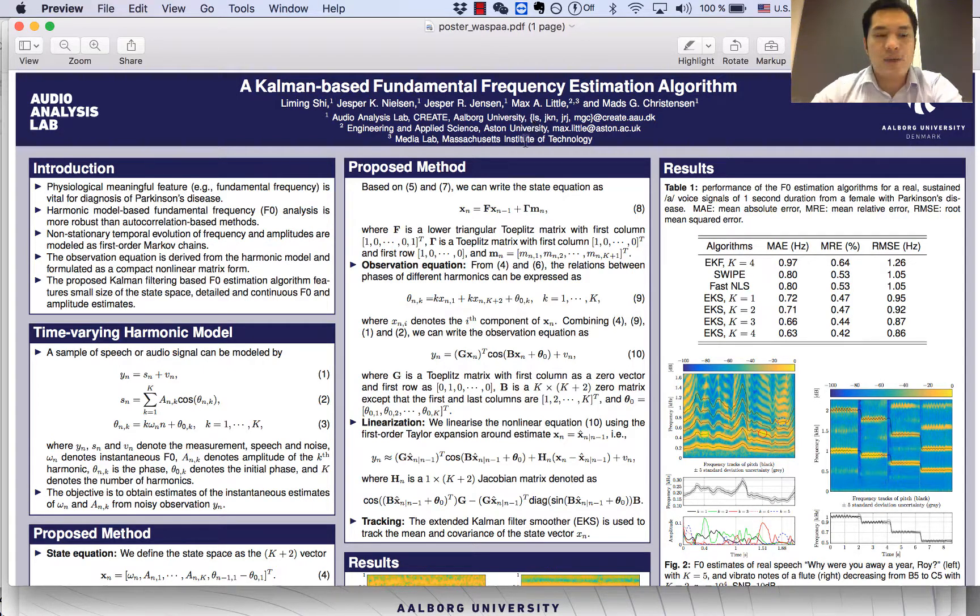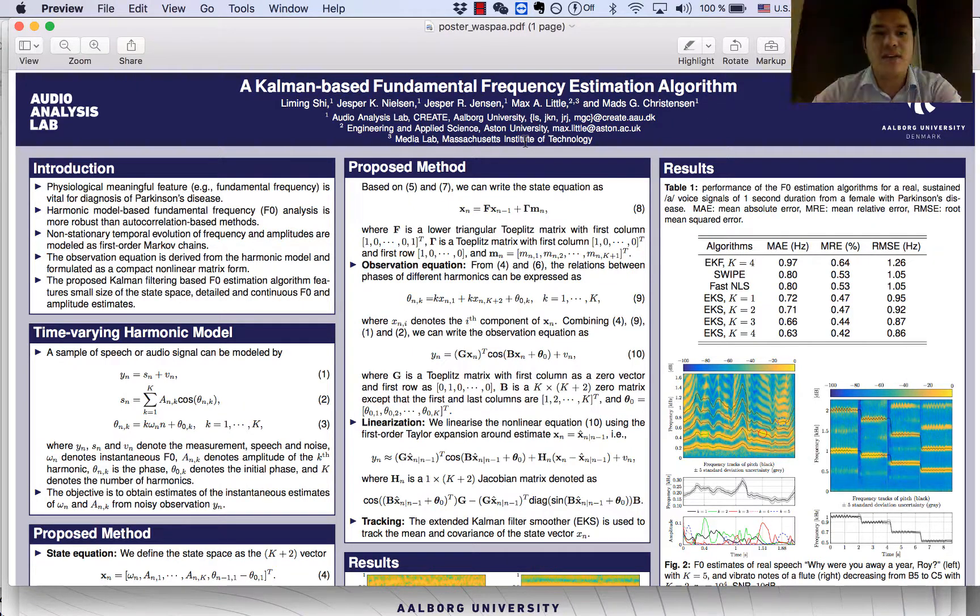In this paper, we model the non-stationary temporal evolution of frequency and amplitudes using the first-order Markov chains. We derive the observation equation based on the harmonic model and formulate it as a compact non-linear matrix form. Then we use the Kalman filter for fundamental frequency estimation, which features very small size of state space and detailed continuous fundamental frequency and amplitude estimates.